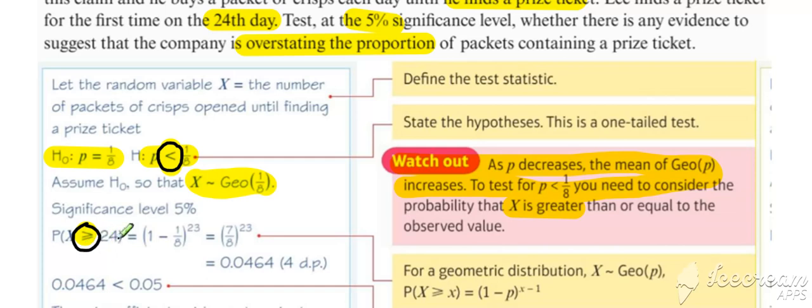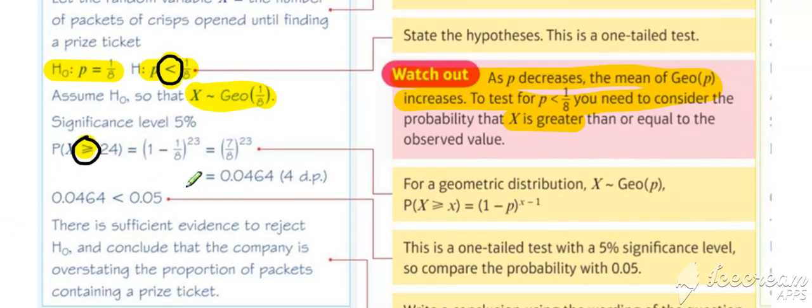Probability of X is greater than or equal to 24 is required. After that, it's the same procedure. You get your probability value, you compare your probability value to the significance level. On this occasion, it's less than, so you would reject H naught and then conclude in the context of the question as per usual.